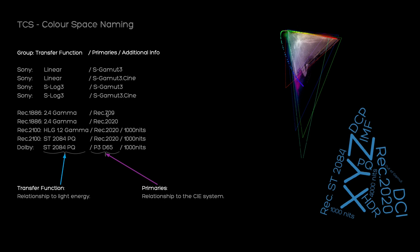REC 709 is the standard of an HD video camera, not a display, and REC 709 does not follow a 2.4 power law gamma function. In REC 1886, the HD reference display was defined with 2.4 gamma and using the primaries established with the REC 709 standard. That is how we read these three pieces of information in the naming.